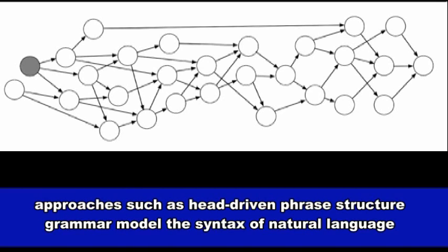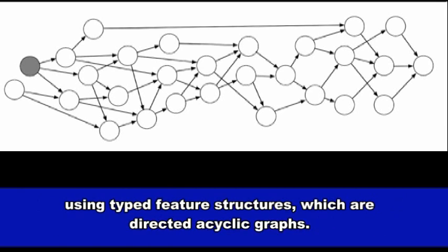More contemporary approaches such as head-driven phrase structure grammar model the syntax of natural language using type feature structures, which are directed acyclic graphs.